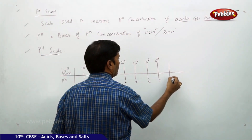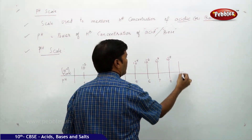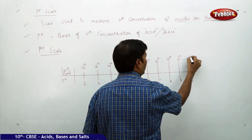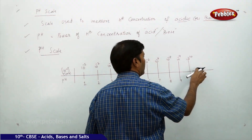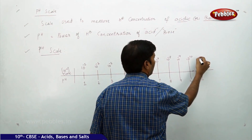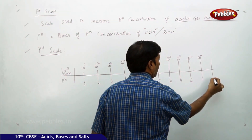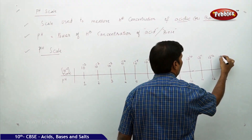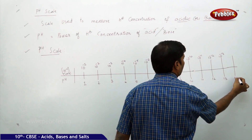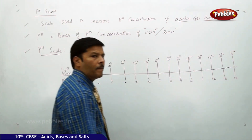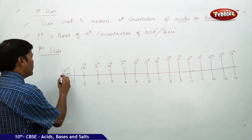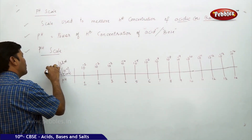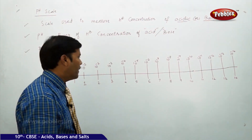Continuing: pH 8 is 10 to the power of minus 8; pH 9 is 10 to the power of minus 9; pH 10 is 10 to the power of minus 10; pH 11 is 10 to the power of minus 11; pH 12 is 10 to the power of minus 12; pH 13 is 10 to the power of minus 13; and pH 14 is 10 to the power of minus 14. The concentration is expressed in moles per liter.